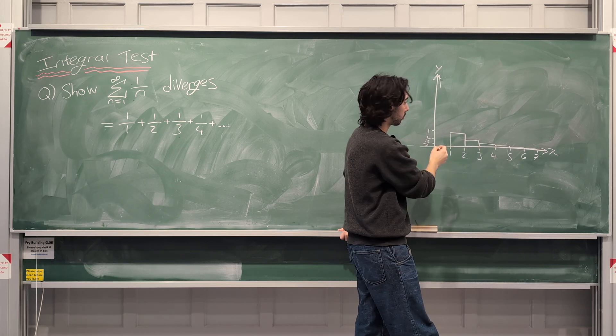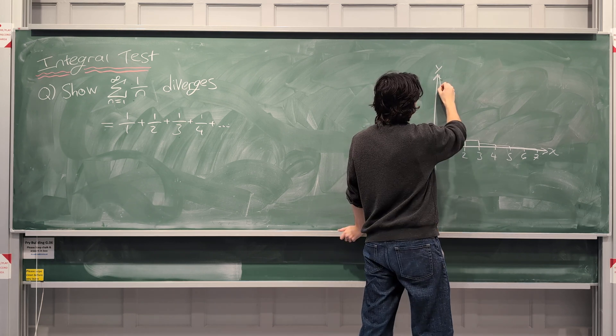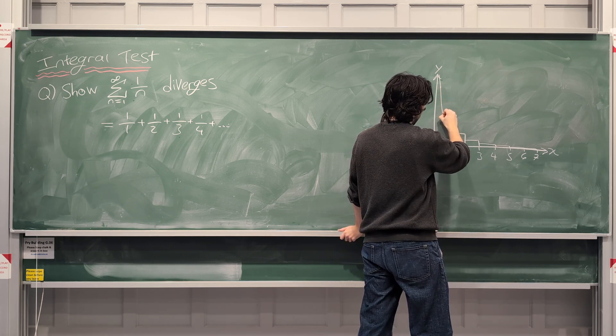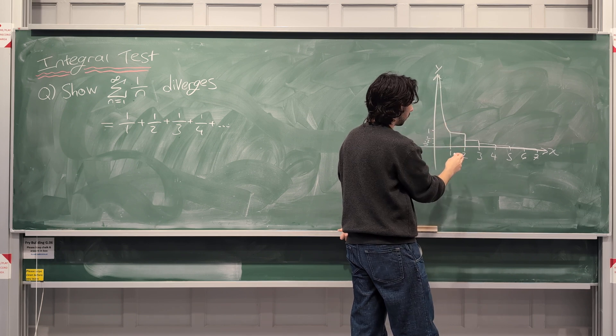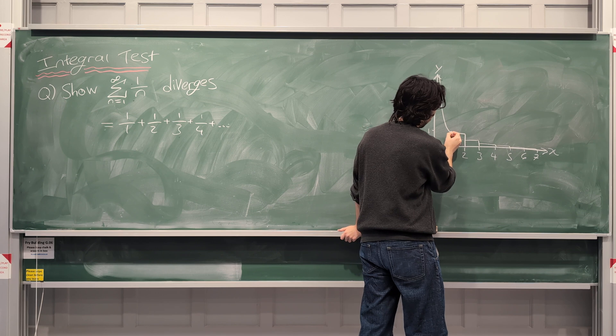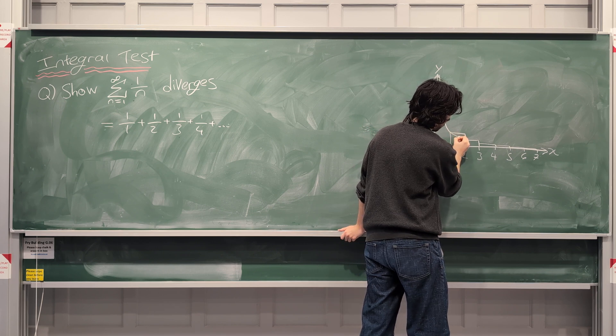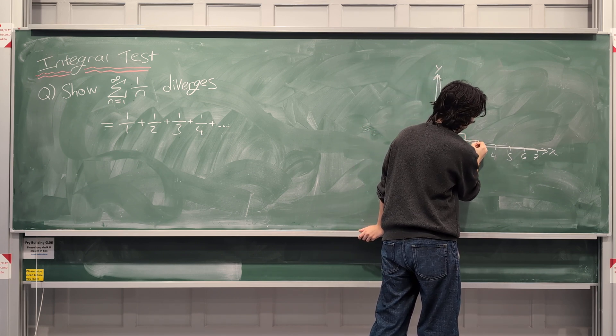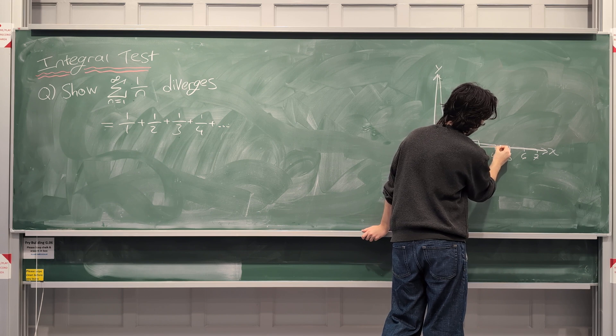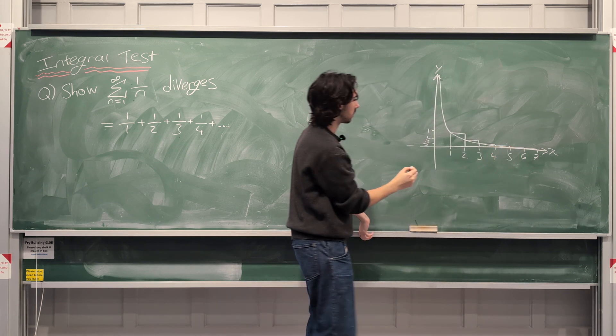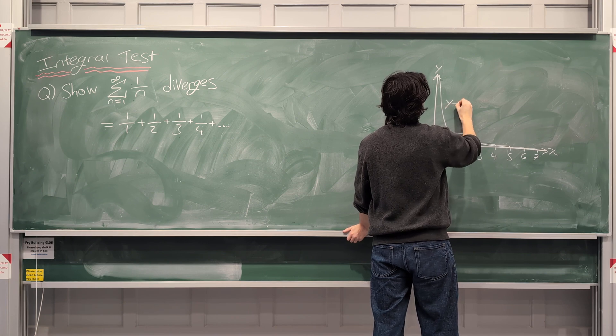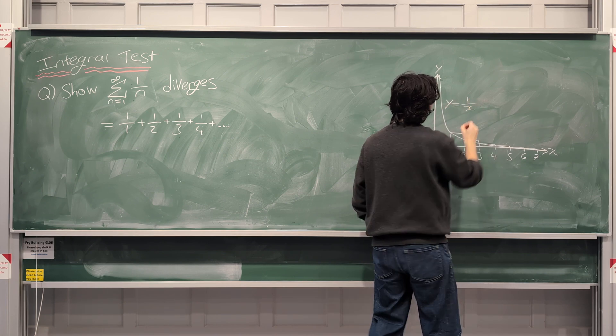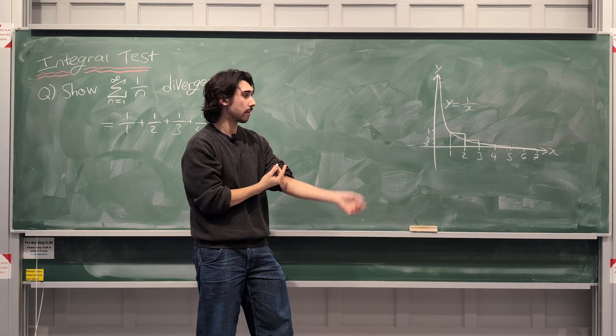1 over x goes through the point 1, 1, so it has to go through this point here. It also goes to the point 2, 1/2, so do you see that it's going through the top left corner of each one? Hopefully that makes sense.